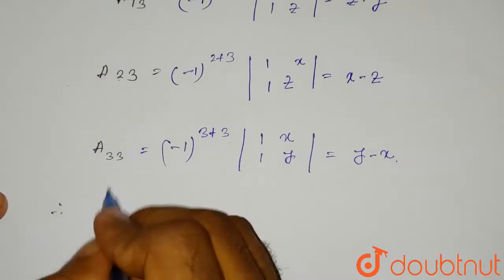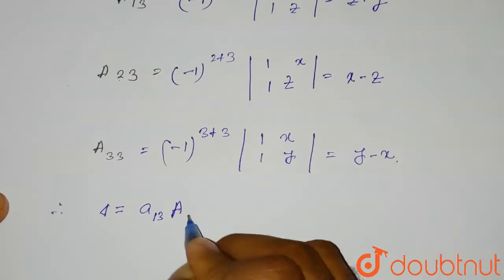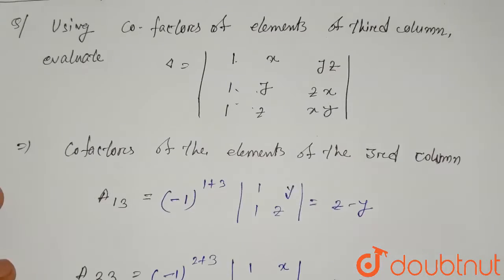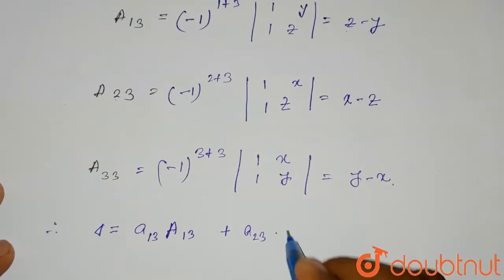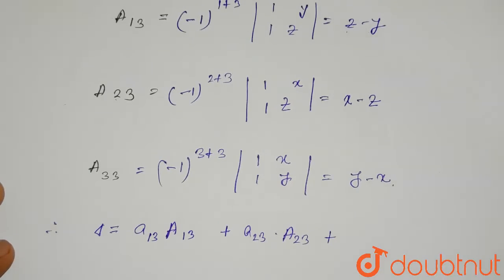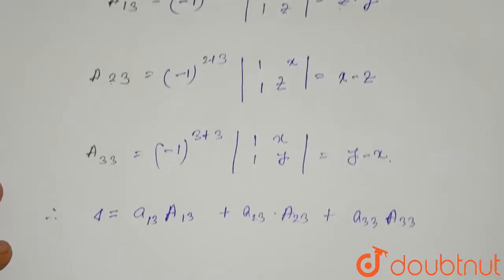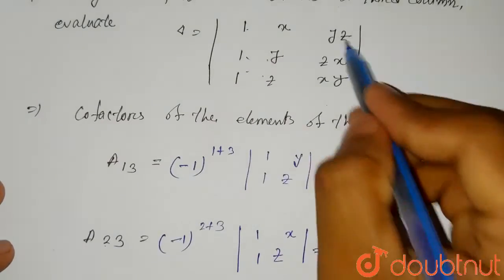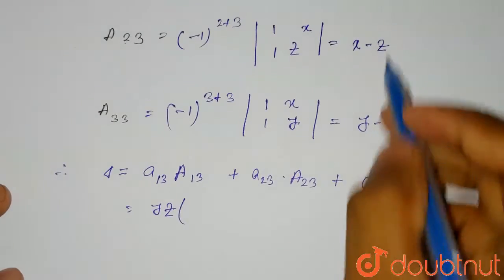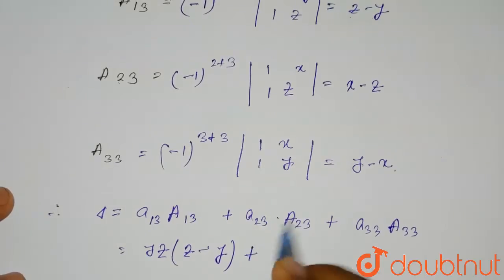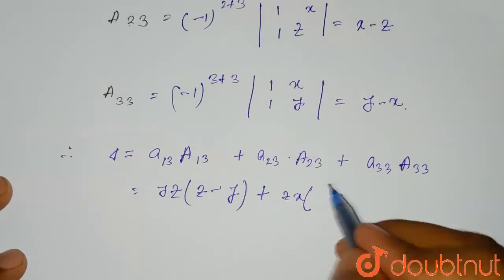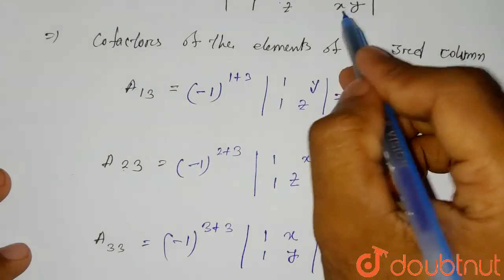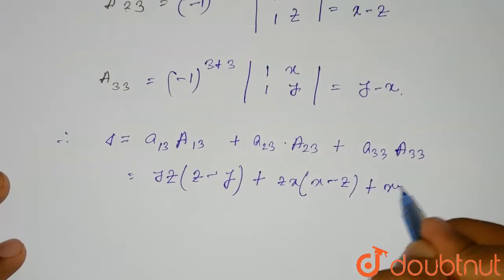Therefore, delta equals a13 times capital A13 plus a23 times capital A23 plus a33 times capital A33. The element of row one, column three is yz, so it will be yz multiplied by (z minus y). Plus a23 element zx multiplied by (x minus z). Plus a33 element xy multiplied by (y minus x).